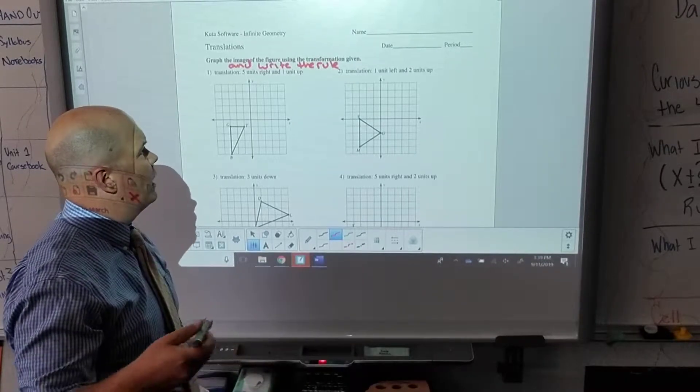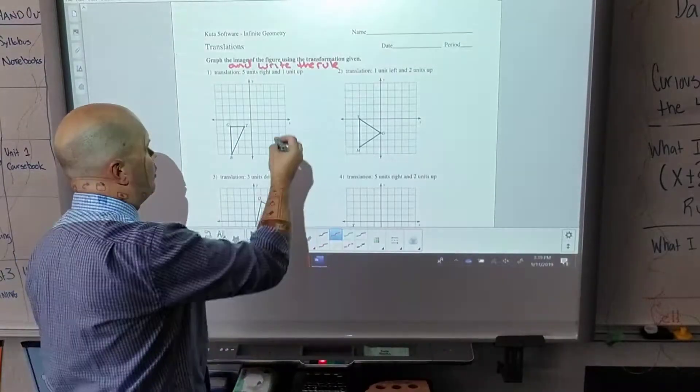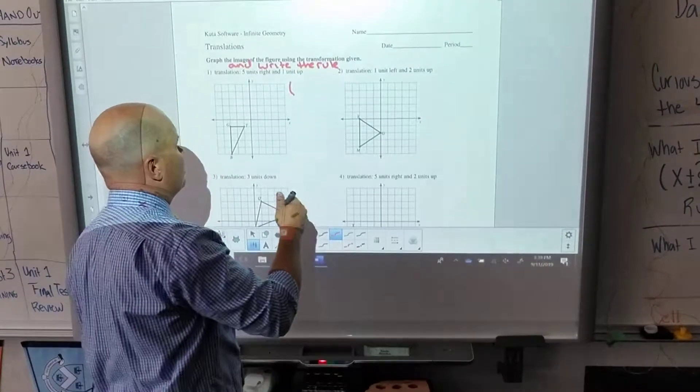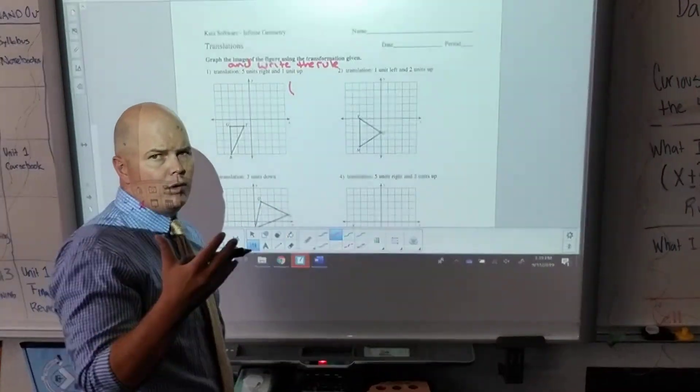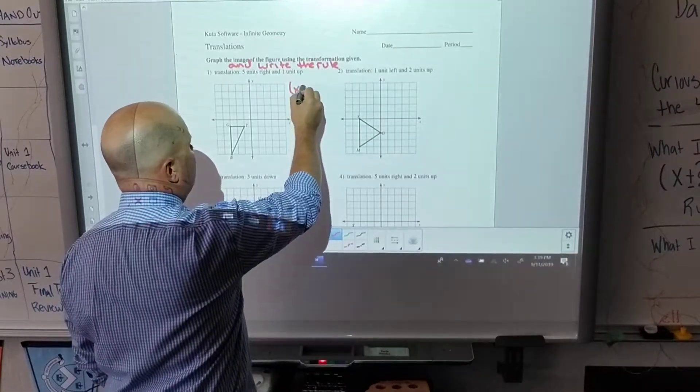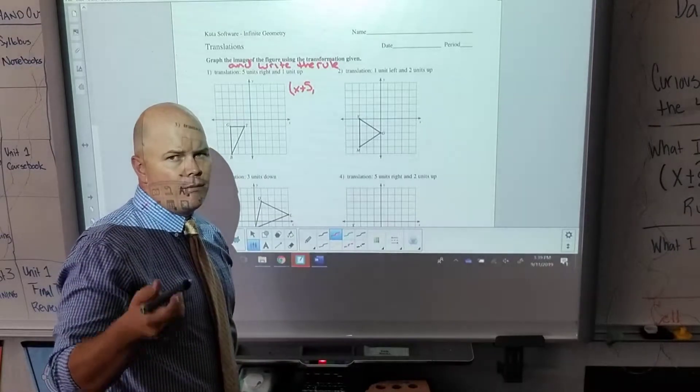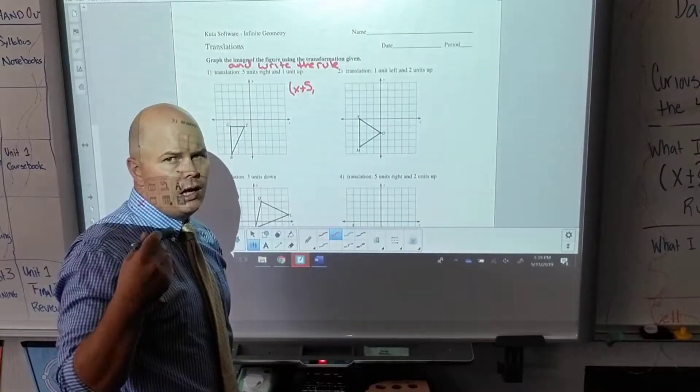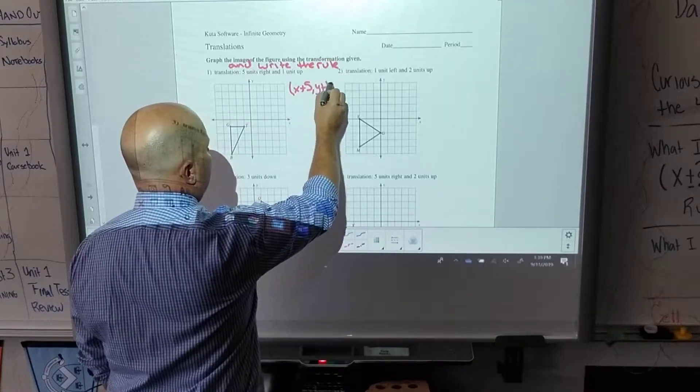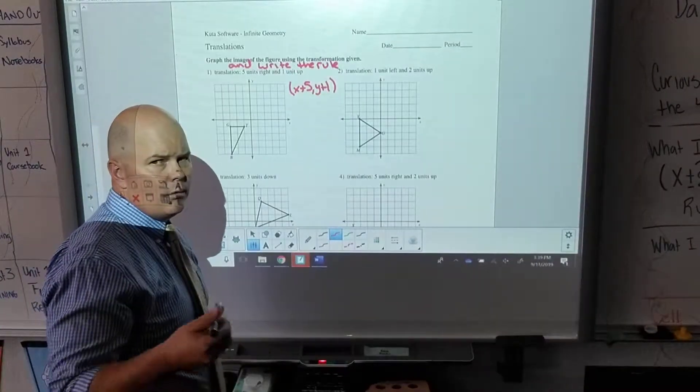For this first one it says it's a translation, five units to the right and one unit up. So the first thing I'm going to do is write my rule: five units to the right - right is a horizontal movement and to the right is positive - so I know my x coordinate is going to be x plus five. And one up is my vertical move, and up is positive, so that's going to be y plus one.